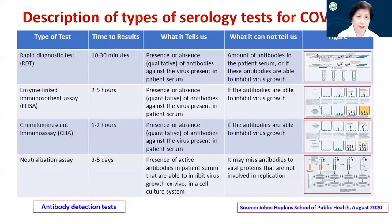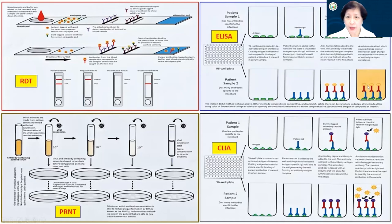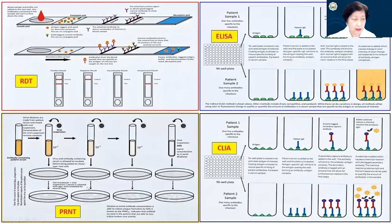Those figures show the RDT, and I have a bigger slide for that later. The difference between ELISA and CLIA is that CLIA uses luminescent light that is emitted, whereas ELISA uses a color reaction depending on the enzymes used. The test for neutralization is the basic plaque reduction neutralization test; there are now surrogate viruses being used so you do not use actual infectious particles.